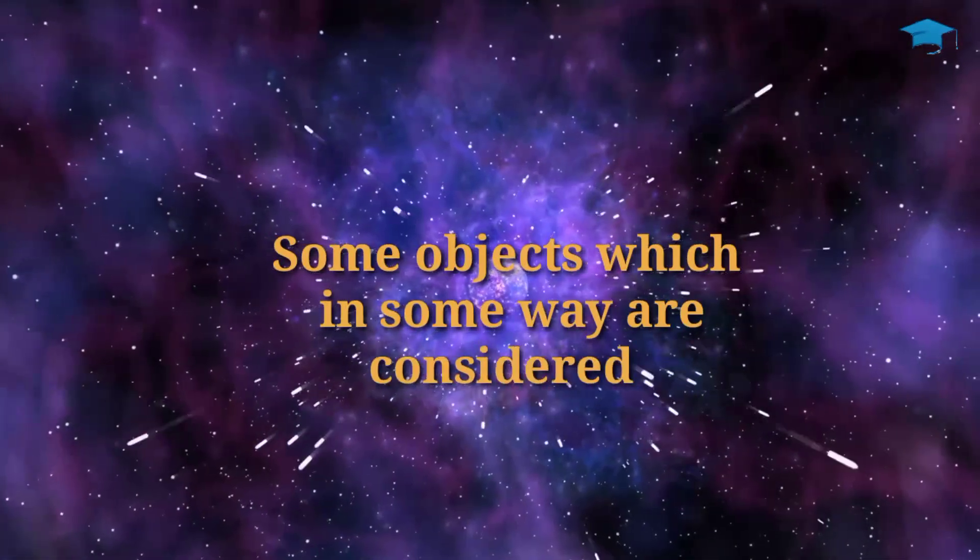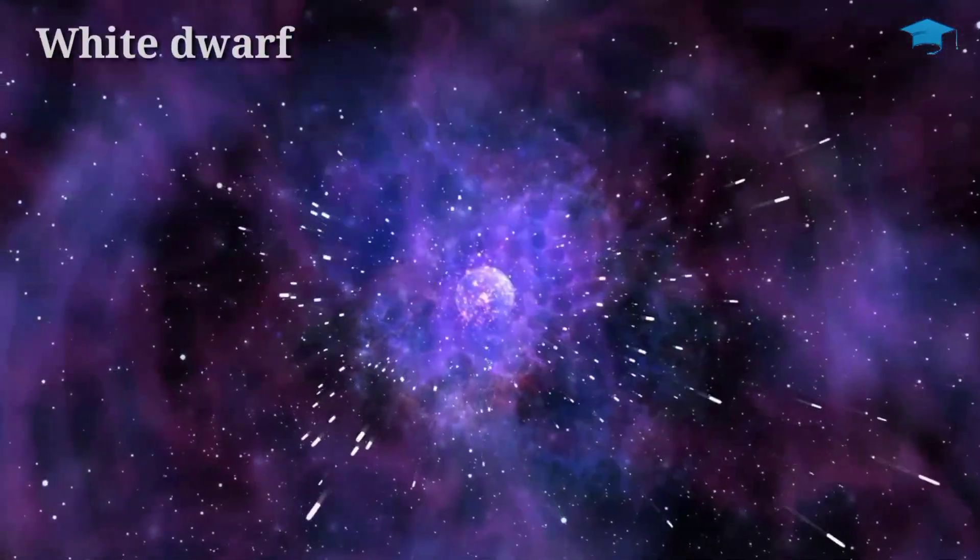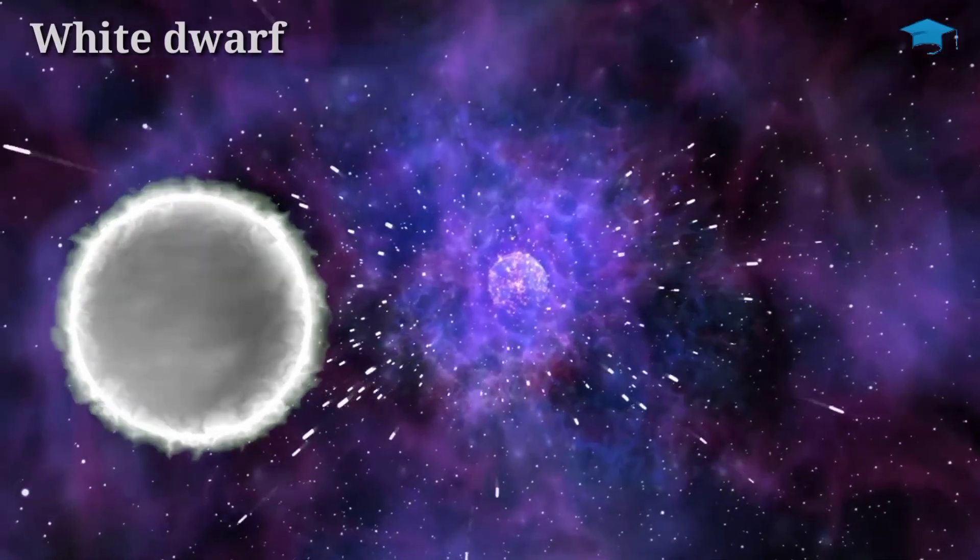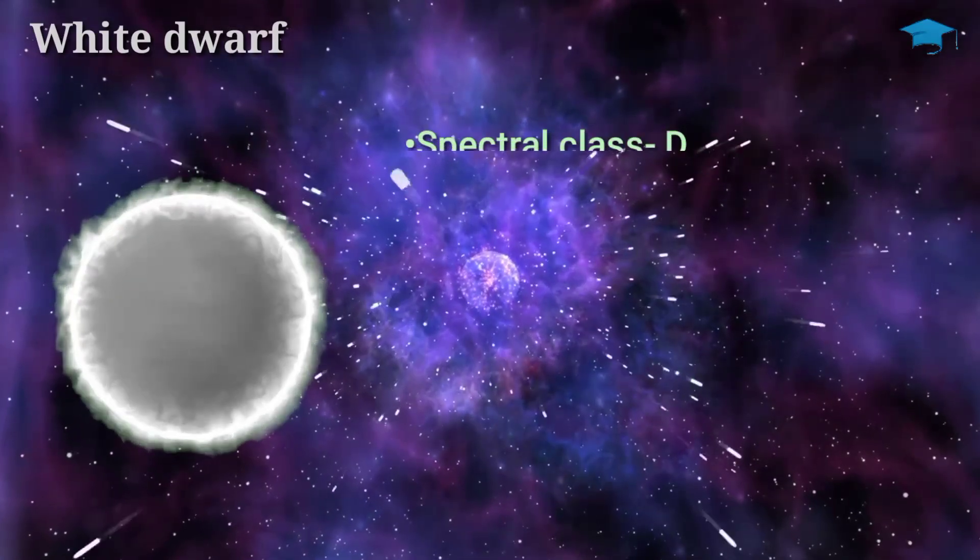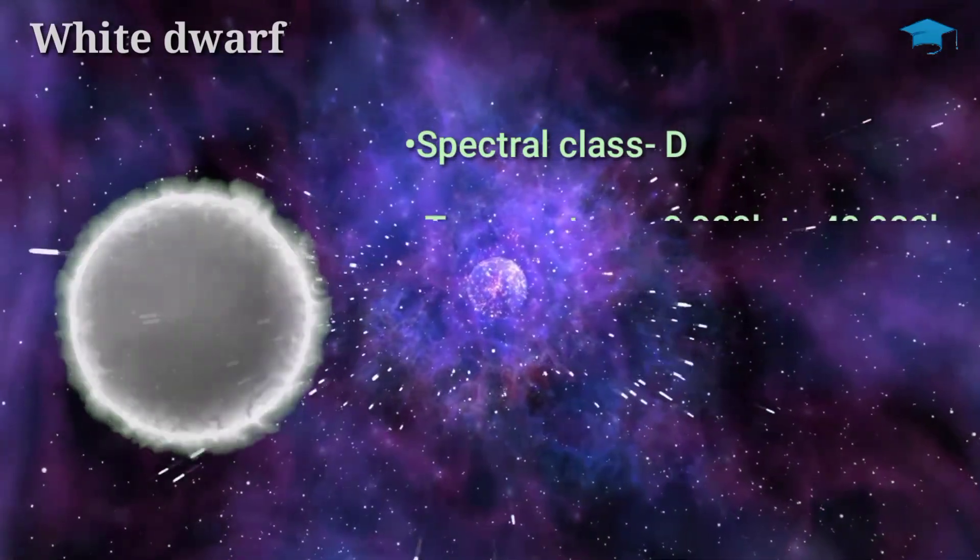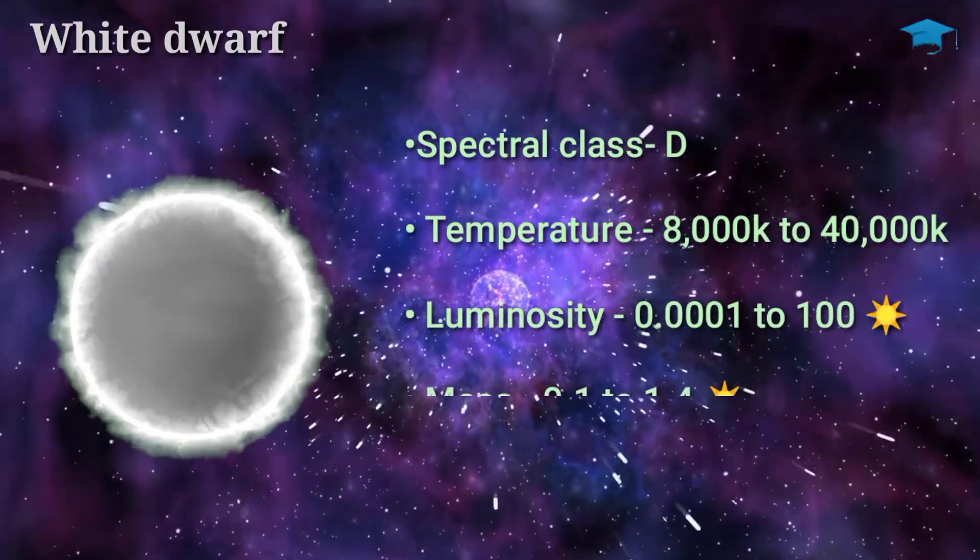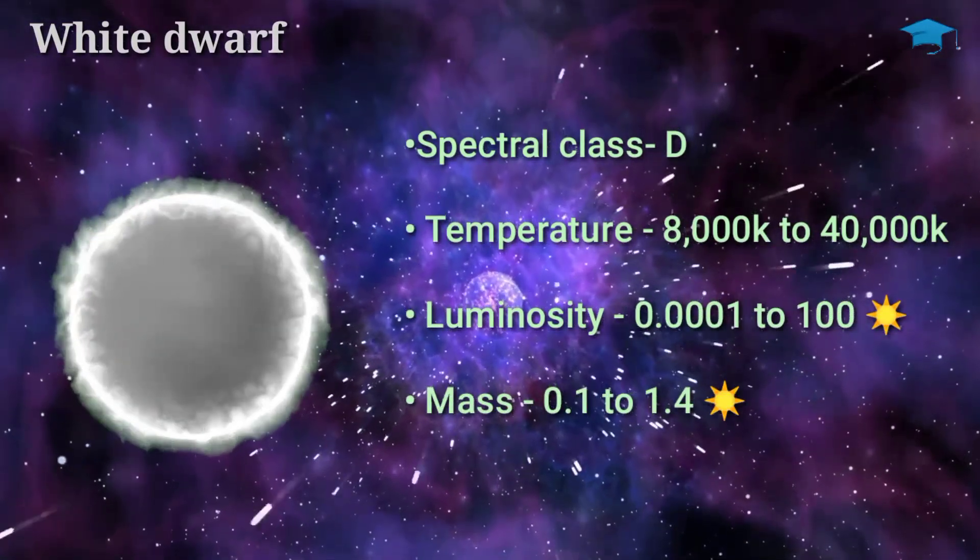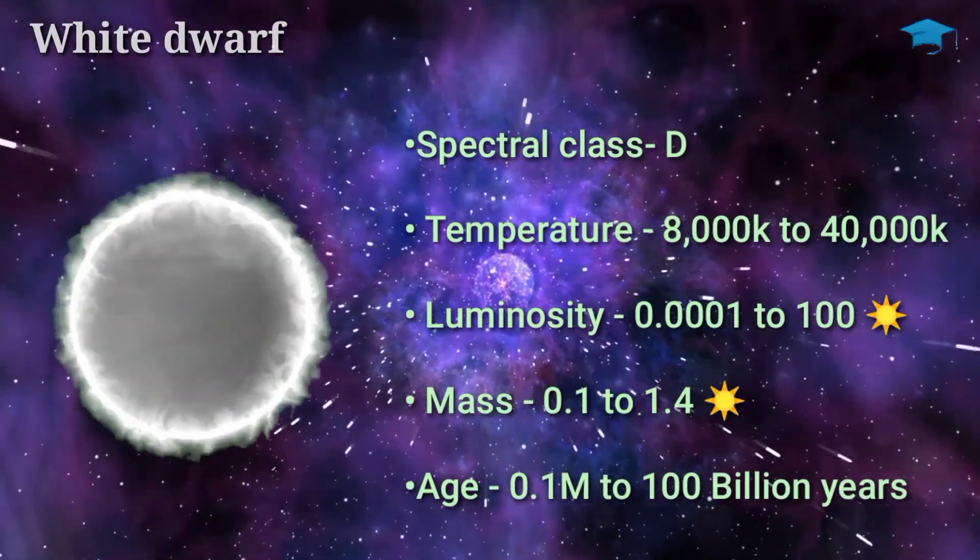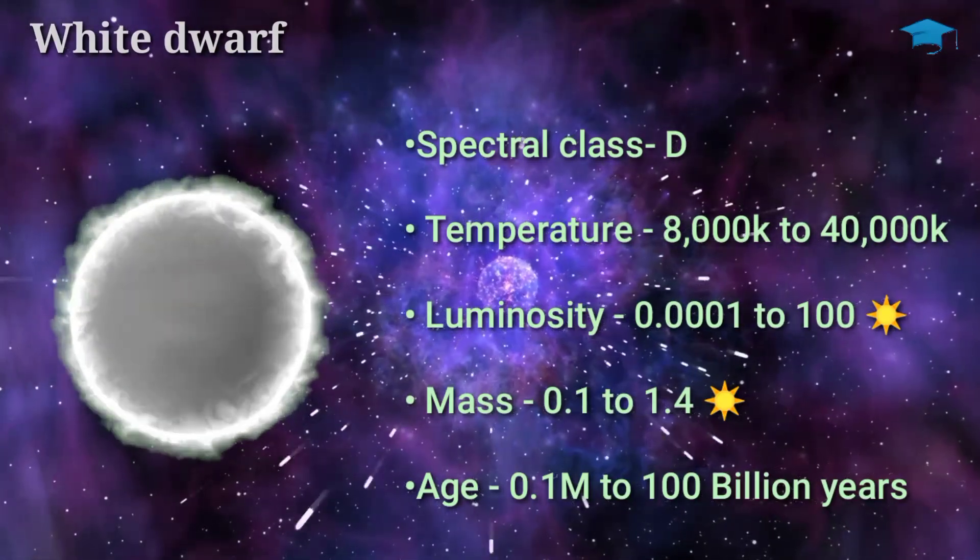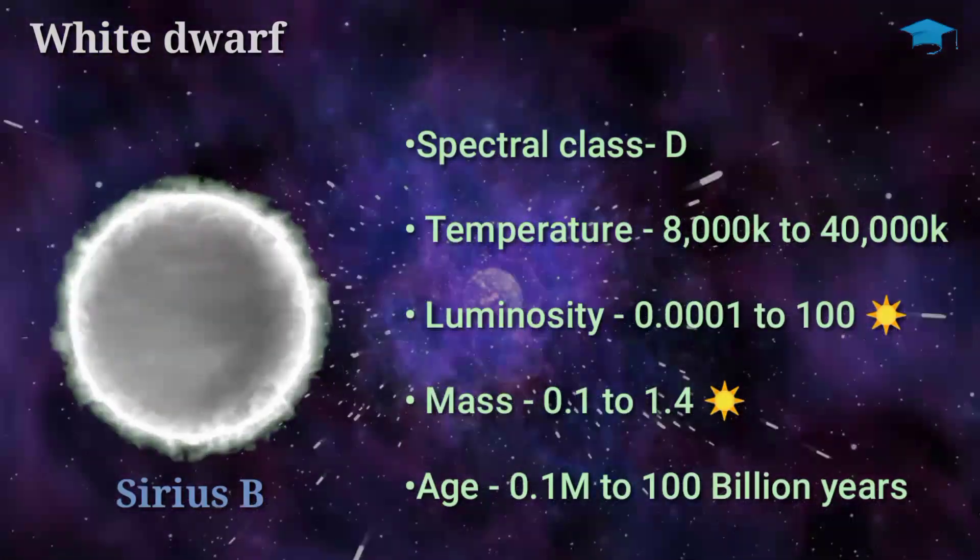Now in the last part of this video, let us learn about some objects which in some way are considered as stars. The first one is a white dwarf. These stars have a prevalence of around 0.4% and a spectral type D. They have a temperature of around 8,000 to 40,000 Kelvin and luminosities of around 0.0001 to 100 times that of our sun. They have a mass of around 0.1 to 1.4 that of our sun and live up to 0.1 million to 100 billion years. Sirius B is a white dwarf star.